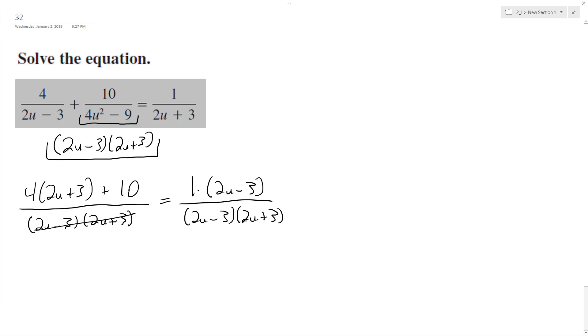So same common denominators, we can just cancel those out. So we end up with 8u plus 12 plus 10 equals 2u minus 3.